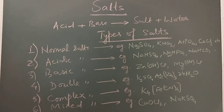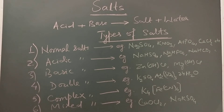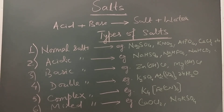Now, coming to mixed salt. Mixed salt contains more than one type of cation or anion, like calcium oxychloride CaOCl₂, where the different types of anions are Cl⁻ and OCl⁻. Another example is sodium potassium sulfate, where the different types of cations are sodium ion and potassium ion.